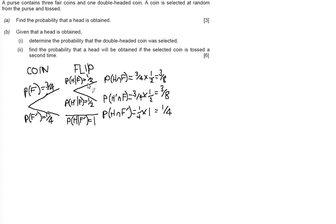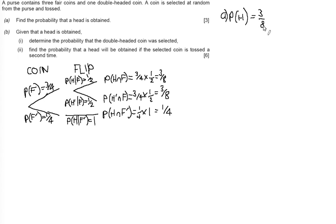The tree diagram maps all possible outcomes and their probabilities. For part A, the probability of getting a head: there are two ways to get a head. The probability of a head with a fair coin is three-eighths, plus the probability of a head from the unfair coin, which is one-quarter. Summing these gives a total probability of five-eighths.